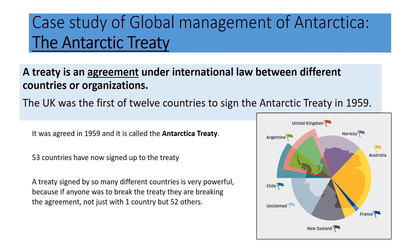A treaty is an agreement under international law between different countries or organizations. This treaty was first agreed in 1959 and the UK was one of 12 countries that first signed it. The treaty has now grown to 53 countries, and a treaty is really powerful because if you break it, you're not just breaking your agreement with one country but 52 others.